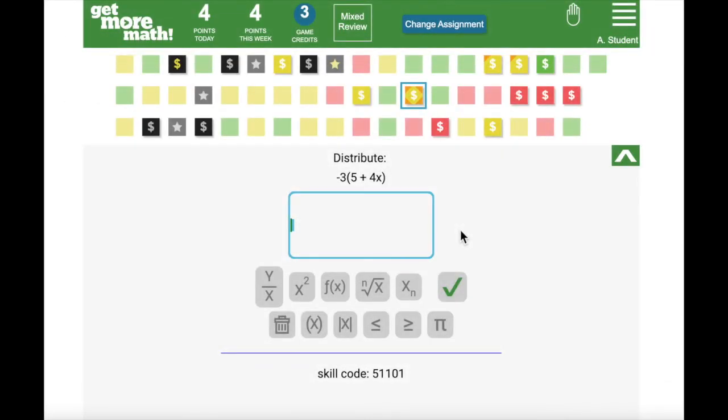On the dashboard at the top of your screen, you'll be able to see your points for the day as well as your points for the week. You'll also be able to keep track of your progress towards getting game credits. You will receive game credits by earning points in Get More Math. I'll explain more about these a little later.